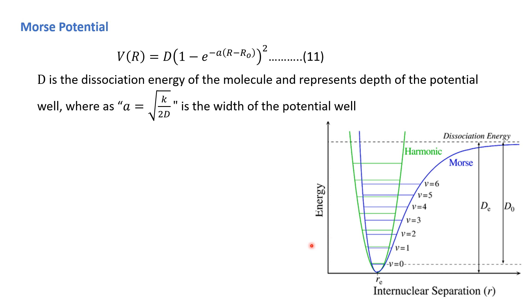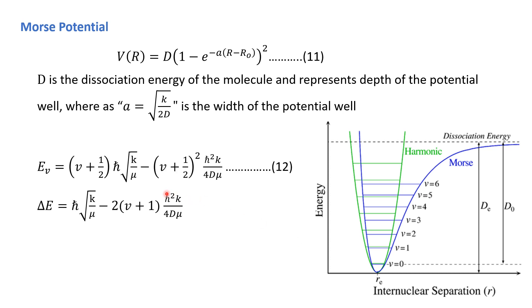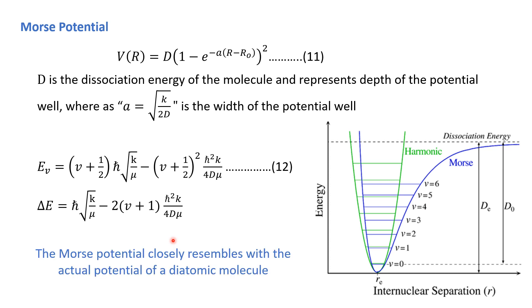Using the Morse potential, we can calculate the vibrational energy levels, now given by a new relation. Finding the spacing between any two vibrational energy levels shows that as we increase the vibrational quantum number, the spacing between energy levels goes on decreasing. This was all about the vibrational energy levels of a diatomic molecule. The next lecture will cover the vibrational energy levels of polyatomic molecules and then the vibrational spectra, which also includes contributions from the rotational spectra. Thank you.